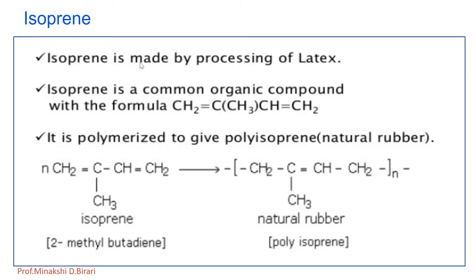Isoprene is a common organic compound with the formula CH2=C(CH3)-CH=CH2. It is made by processing of latex, and latex is a colloidal dispersion of rubber particles in water. The latex is coagulated by acetic acid, formic acid, or potassium or ammonium alum. When the cheese-like mass separates out, it is passed through rollers after washing with water to obtain a pale yellow variety called crepe rubber.